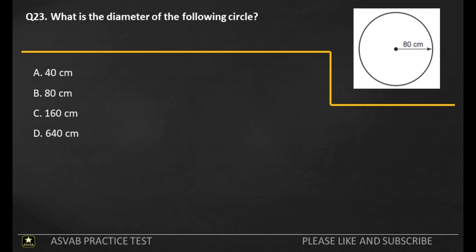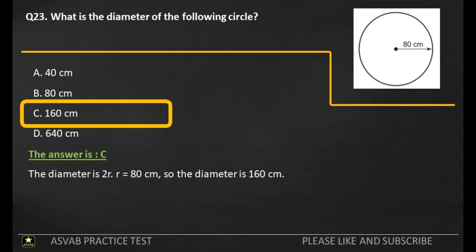Q23. What is the diameter of the following circle? A: 40 centimeters. B: 80 centimeters. C: 160 centimeters. D: 640 centimeters. The answer is C. The diameter is 2R. R equals 80 centimeters, so the diameter is 160 centimeters.